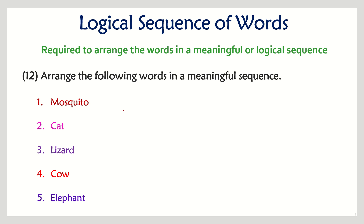Next: mosquito, cat, lizard, cow, and elephant. The logic here is size — arrange them in order of size. The smallest is mosquito, after mosquito comes lizard, after lizard comes cat, after cat comes cow, and after cow comes elephant. Note that you can also arrange from biggest to smallest — in competitive exams, check whether ascending or descending order is asked.